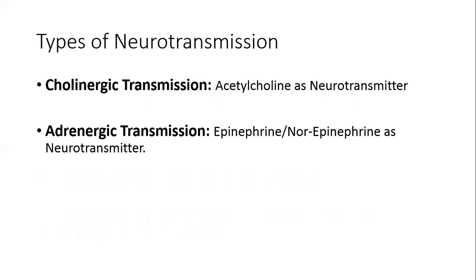Generally, there are two types of neurotransmitters in the autonomic nervous system, depending upon the primary neurotransmitter. The first type is cholinergic, which includes acetylcholine as its primary neurotransmitter. Please keep in mind: acetylcholine is the primary neurotransmitter for cholinergic transmission.